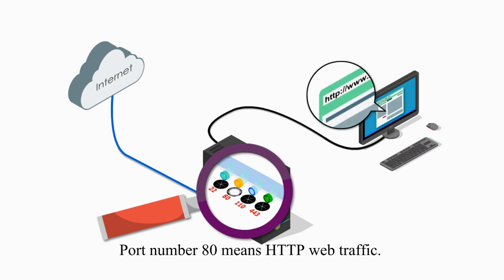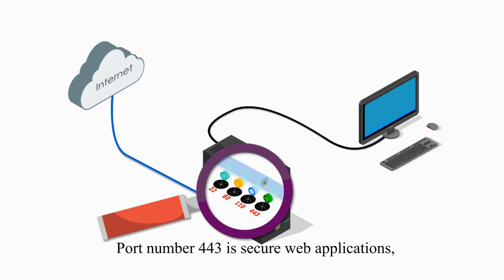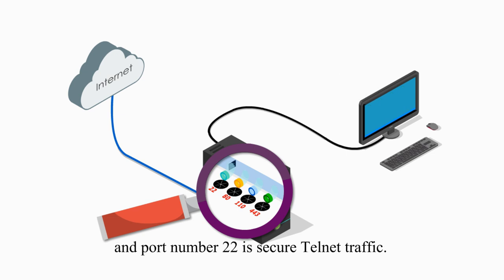Port number 80, for example, means HTTP web traffic — not secure web traffic. Port number 110 indicates email traffic. Port number 443 is the secure version of web applications. And port number 22 is the secure version of telnet traffic.